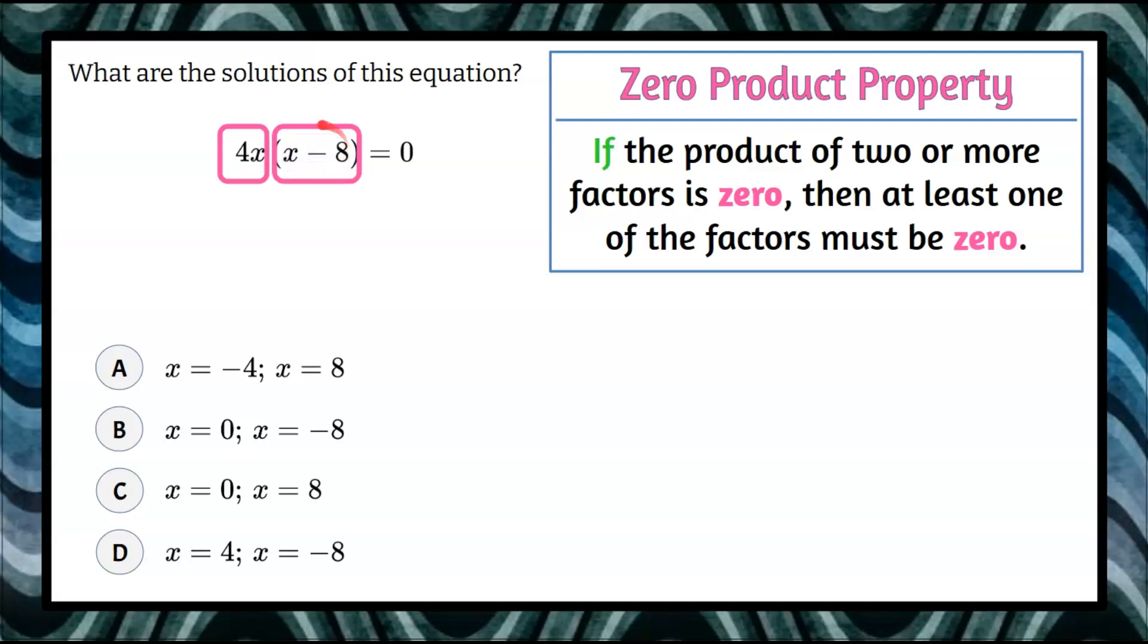must equal 0, because one factor multiplied by 0 gives a product of 0. Thus you have the zero product property.